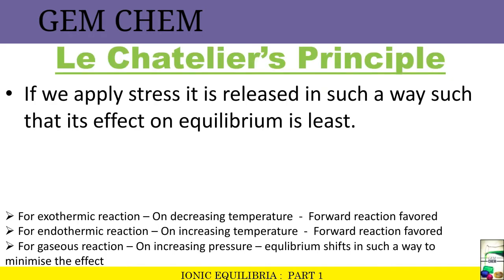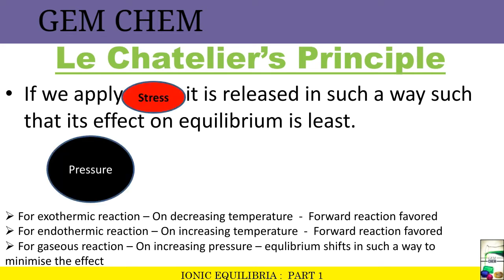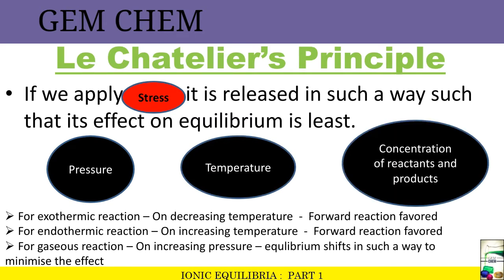We have already learned about Le Chatelier's principle. What it basically says is that if we apply any kind of stress, it is released in such a way that its effect on equilibrium is least — there is a management of the stress using an opposite reaction. The stresses we are talking about are: pressure, temperature, and the concentration of reactants and products.